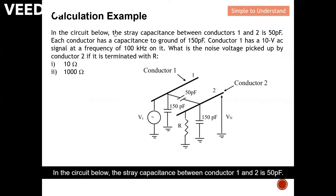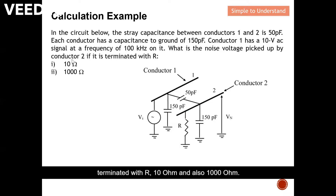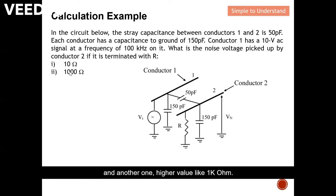Next, I'm going to walk through a simple calculation example. In the circuit below, the stray capacitance between conductor 1 and conductor 2 is 50 picofarads. Each conductor has a capacitance to ground of 150 picofarads. Conductor 1 has a 10-volt AC signal at a frequency of 100 kHz. We want to find the noise voltage picked up by conductor 2 when it is terminated with R = 10 ohms and also R = 1000 ohms.